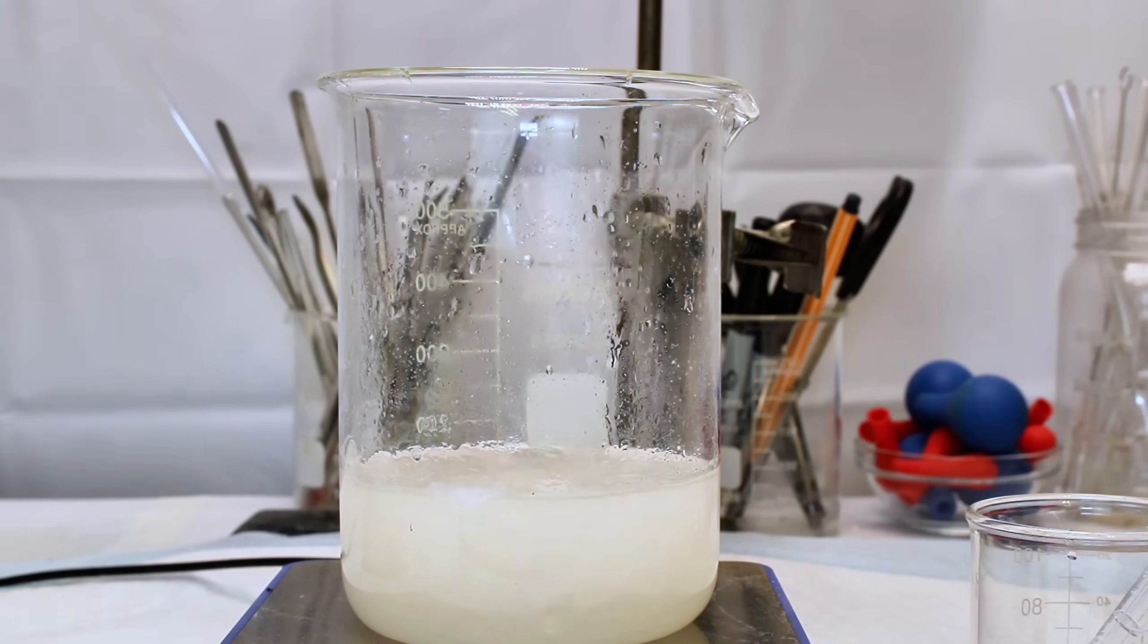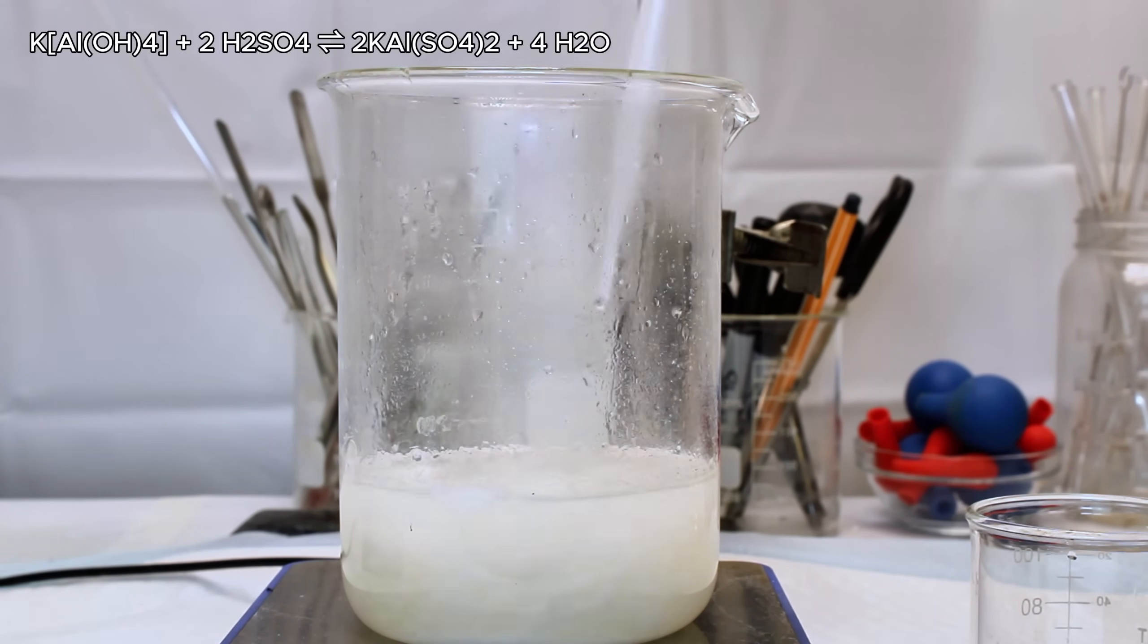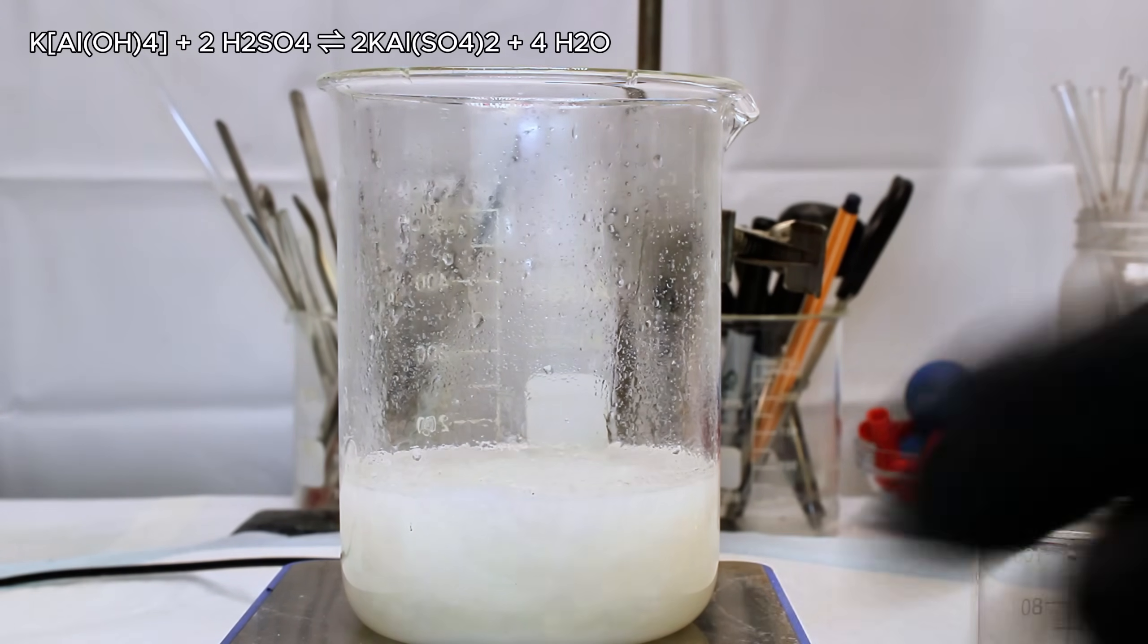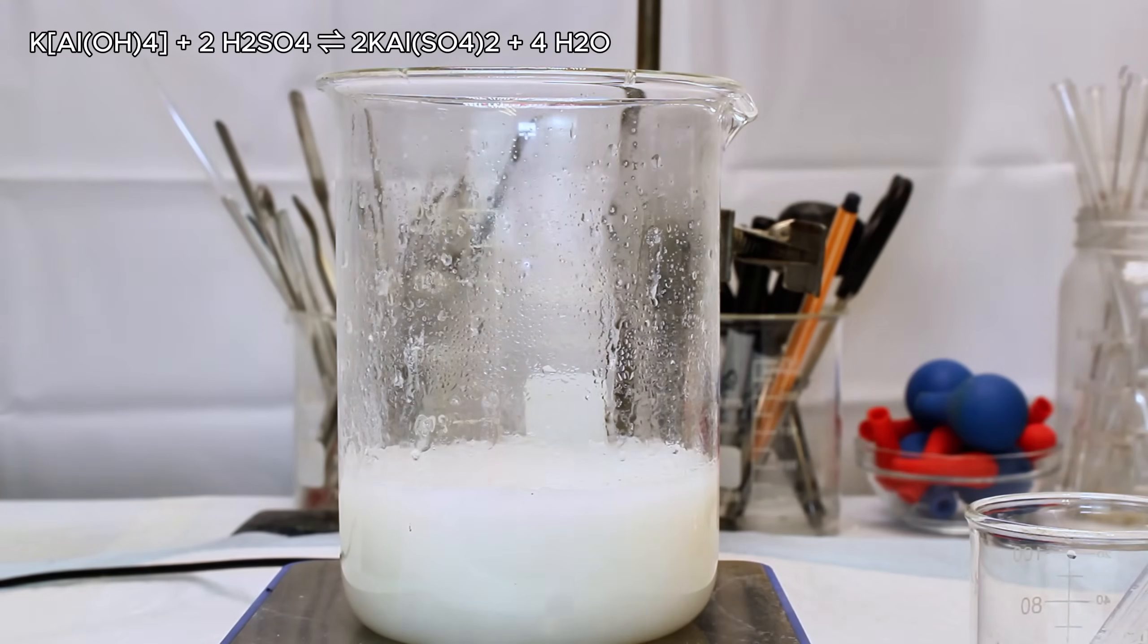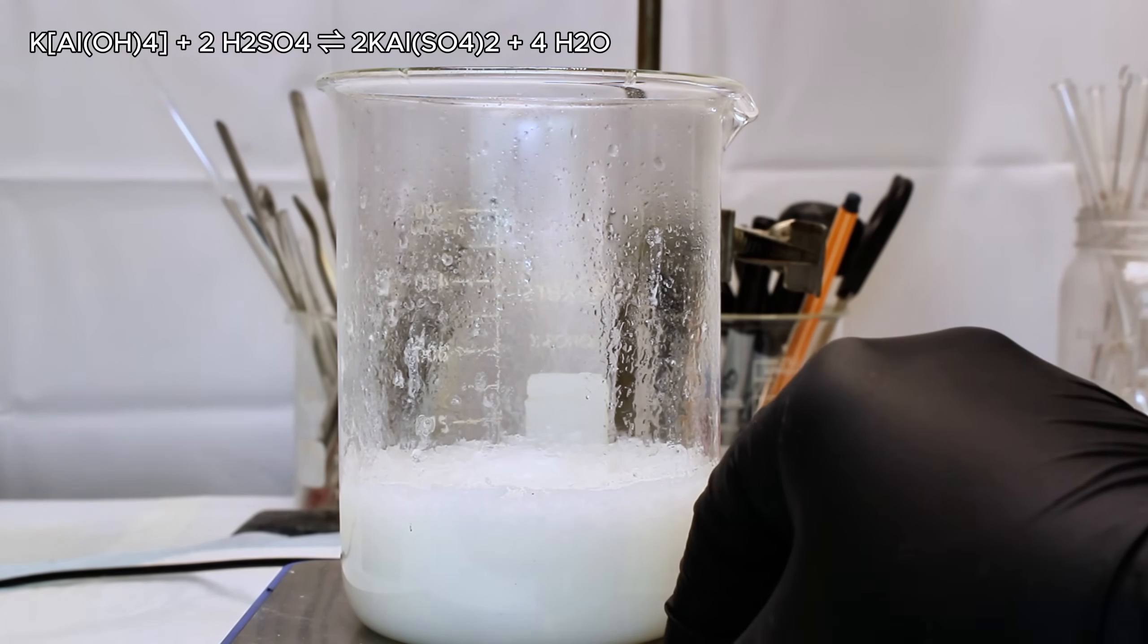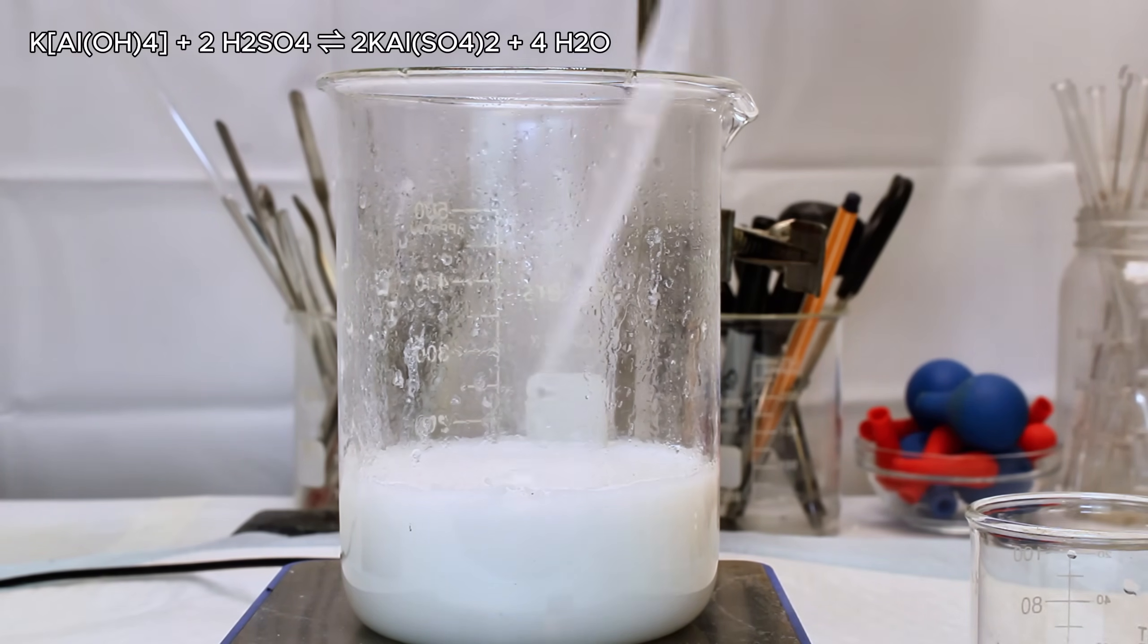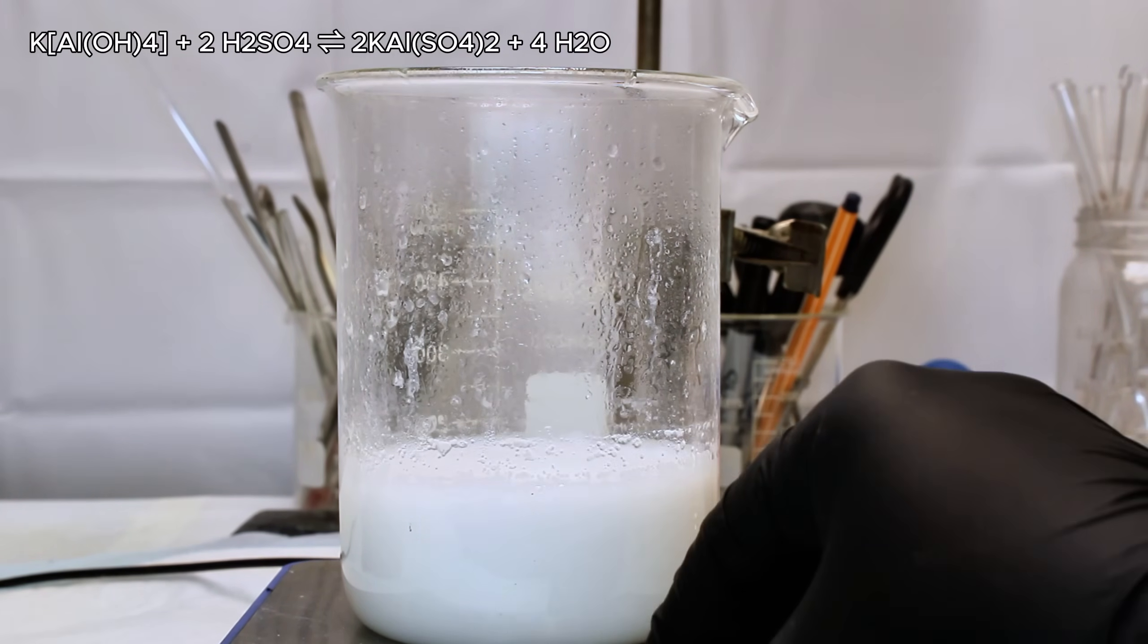Anyway, as the solution neutralizes, the potassium aluminate will first form insoluble aluminum hydroxide and very soluble potassium sulfate. However, as the solution acidifies and reaches a pH of around 3, the aluminum hydroxide will form the target chemical potassium aluminum sulfate, or alum.